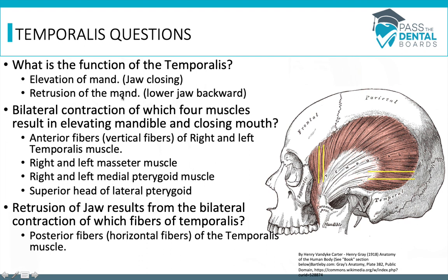Bilateral contraction of which four muscles results in elevating the mandible — closing the mouth? The anterior fibers, also known as the vertical fibers of the right and left temporalis, are going to close the mouth. The right and left medial pterygoid also close the mouth, as does the superior head of the lateral pterygoid. Retrusion of the jaw results from bilateral contraction of the posterior fibers of the temporalis.